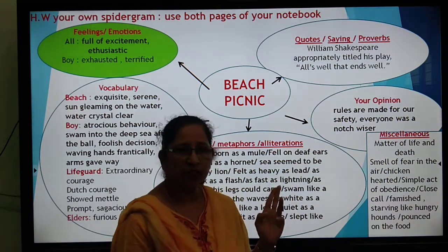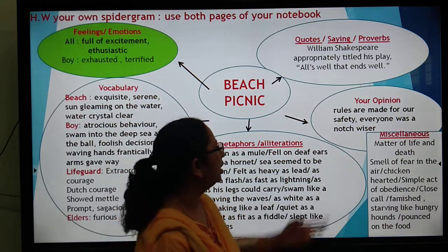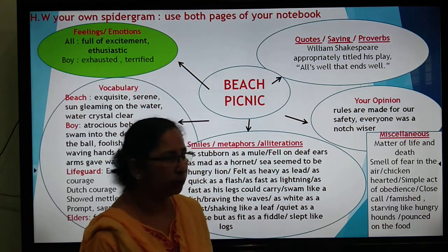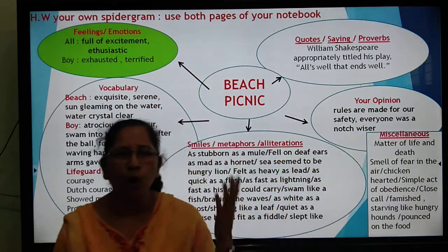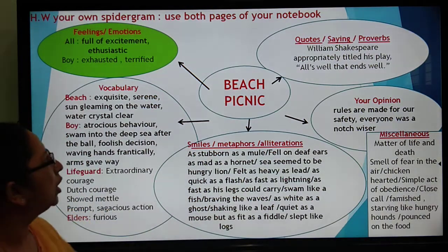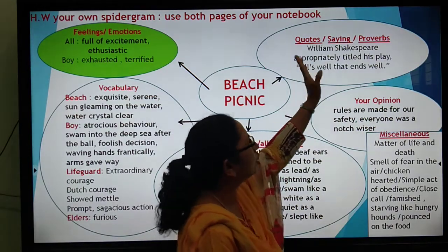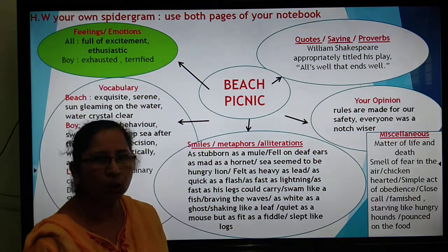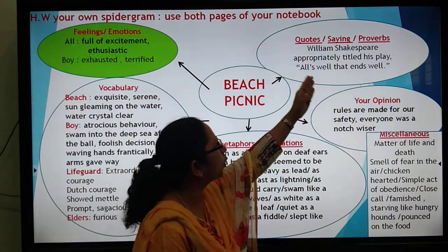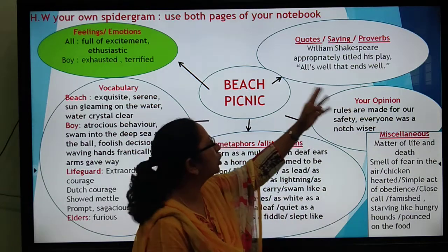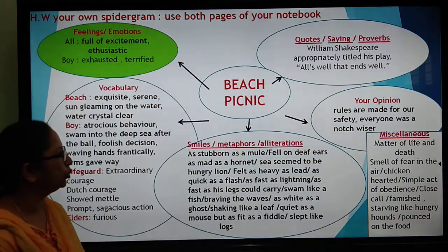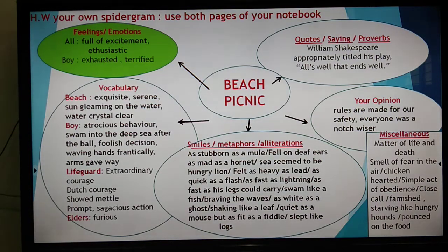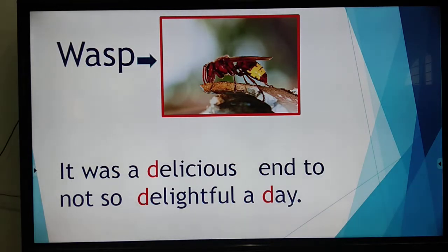We do not like to follow rules, but we realize that rules are made for our safety. You can give your opinion: I feel that rules are made for our safety and we should obey them. After this experience everybody was a little wiser than before. To end your writing, use a quote, saying, or proverb. A very well-known one used by William Shakespeare as the title of his play: 'All's well that ends well.' This is the vocabulary and planning we need to do before writing, otherwise our piece will be boring and mundane.